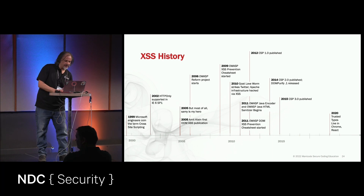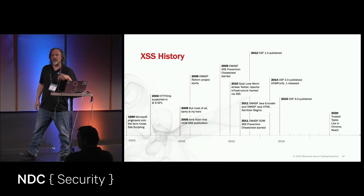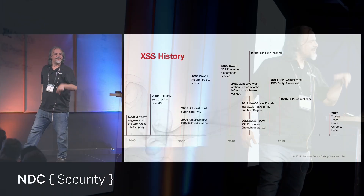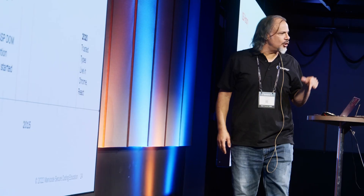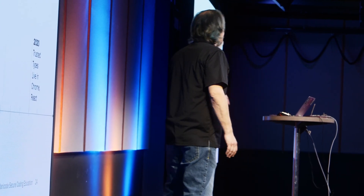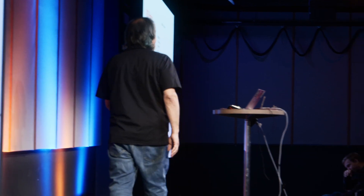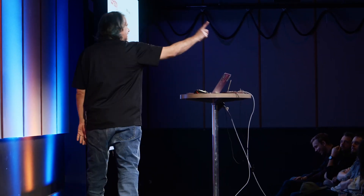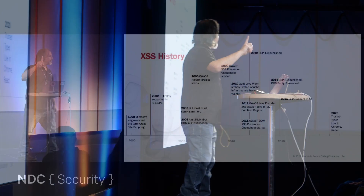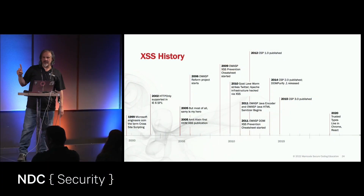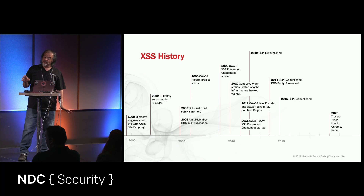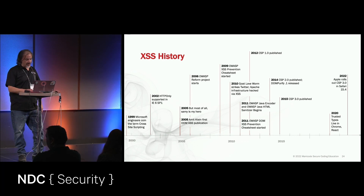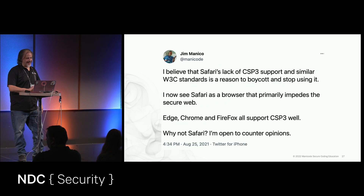Trusted Types showed up in 2020. What's the problem in 2020? Every single browser was supporting Content Security Policy 3, except for one browser — Safari. It is really frustrating. They did roll it out recently, but as you may guess, there's a story behind that.